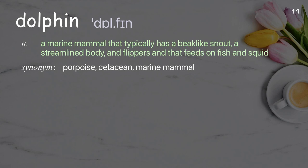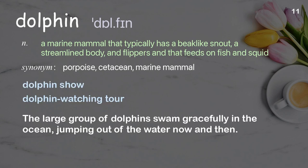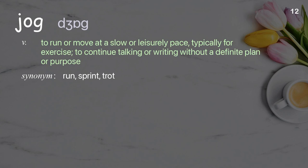Dolphin: a marine mammal that typically has a beak-like snout, a streamlined body, and flippers, and that feeds on fish and squid. The large group of dolphins swam gracefully in the ocean, jumping out of the water now and then.